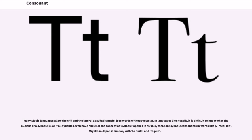Many Slavic languages allow the trill /r/ and the lateral /l/ as syllabic nuclei, creating words without vowels. In languages like Nuxalk, it is difficult to know what the nucleus of a syllable is, or if all syllables even have nuclei. If the concept of syllable applies in Nuxalk, there are syllabic consonants in words like /xɬpʼχʷɬtɬpɬɬskʷcʼ/ ('he had had in his possession a bunchberry plant'). Miyako in Japan is similar, with /ksː/ ('to build') and /psː/ ('to pull').